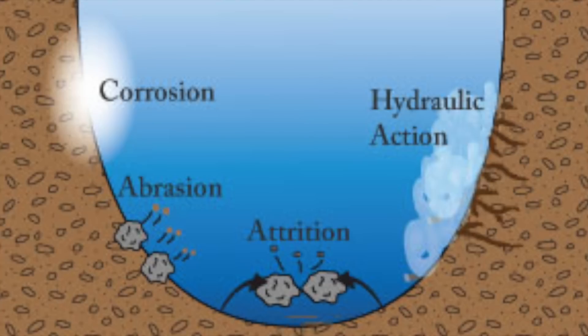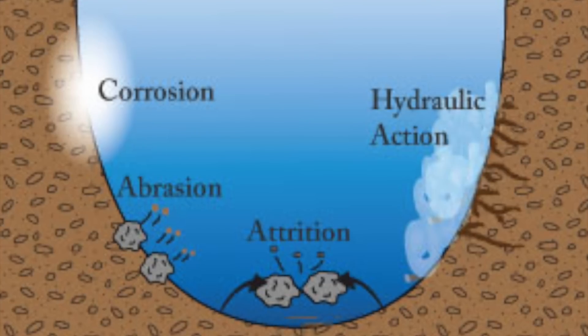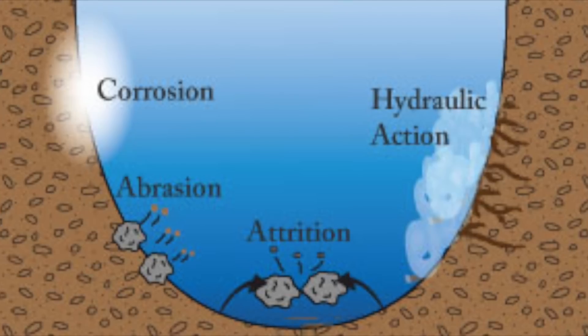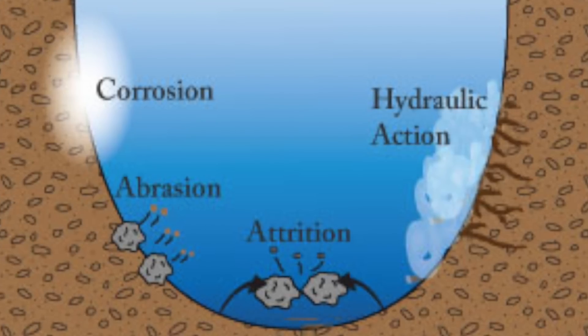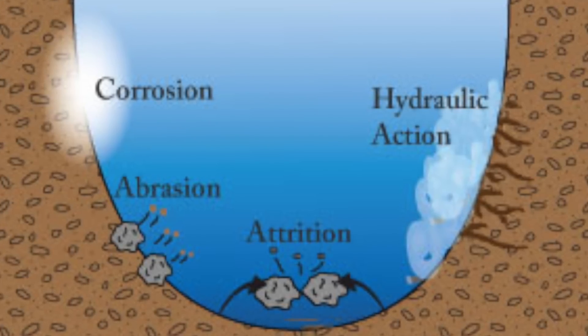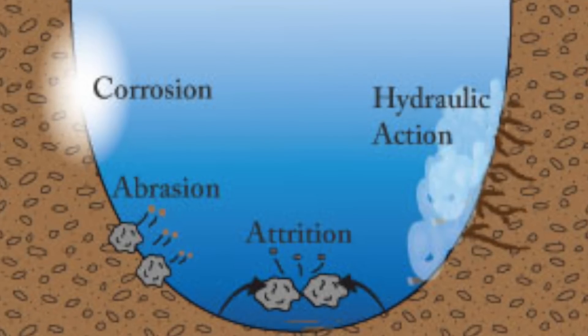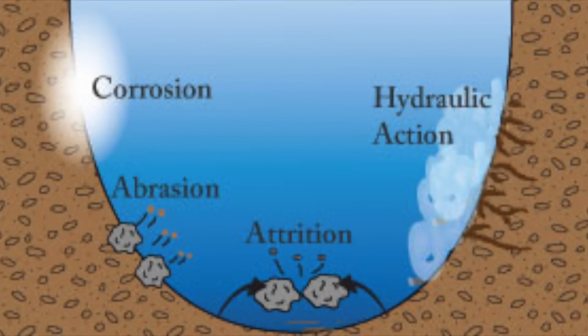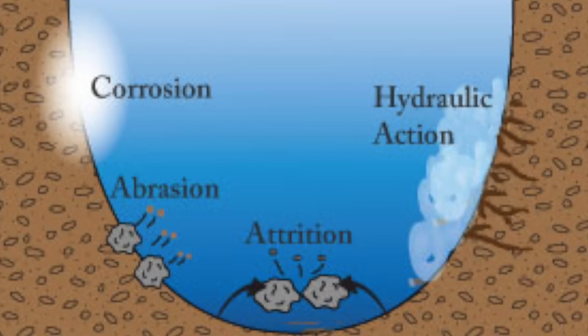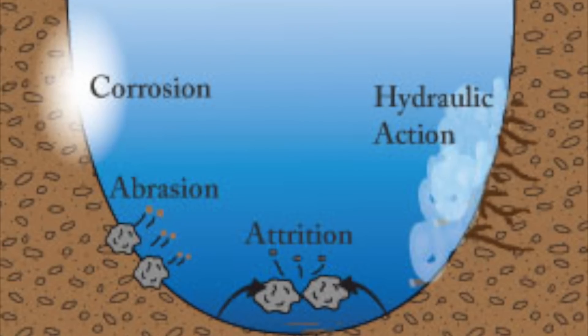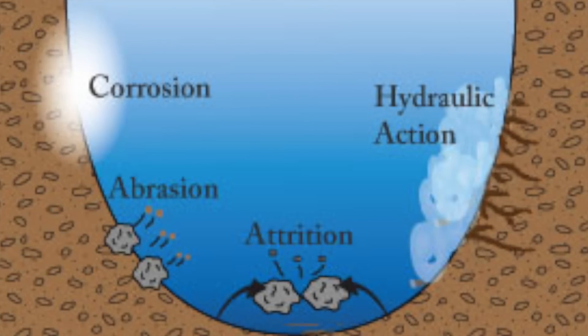Attrition is when pebbles and rocks collide with each other, reducing their size and making them increasingly smooth. You can imagine, if you watch another one of my videos about how the Earth is formed, it's a bit like that where meteors crash together. Here, it's rocks crashing together and reducing in size.